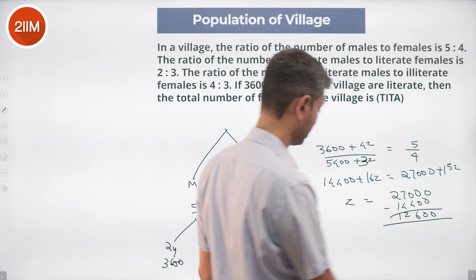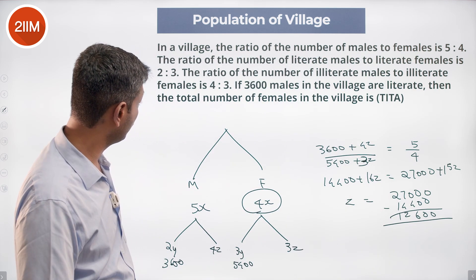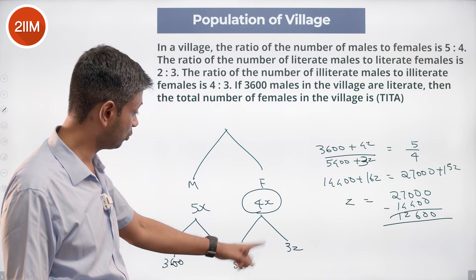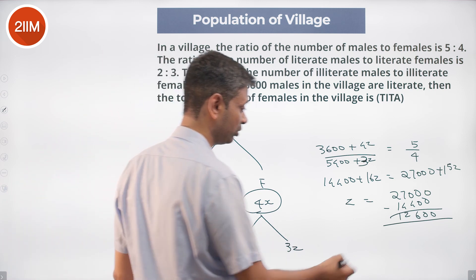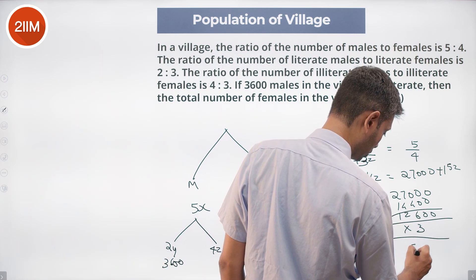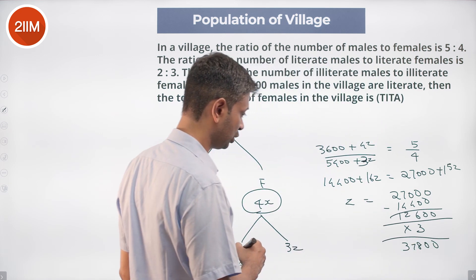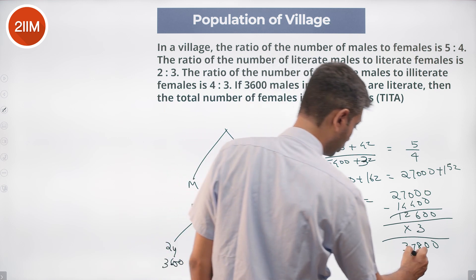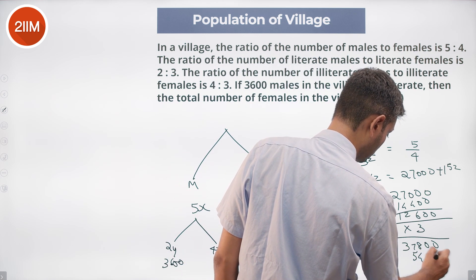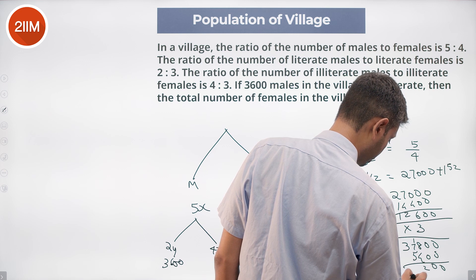What do we need to find out? Total number of females in the village is 5400 plus 3Z. We need to do 3 times this, which is 37800 plus 5400. 0, 0, 2, 8 plus 5 is 3, giving us 43200.